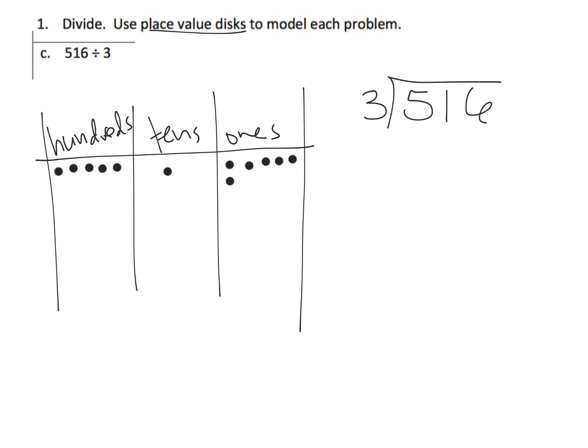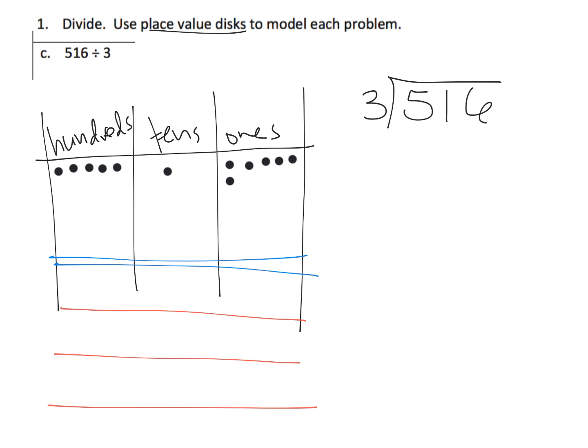We are going to divide by 3, so we need to put our dots into 3 groups. Eureka Math begins to do some shorthand where they're not actually drawing lines to show the 3 groups — they're just clumping them. You teachers know your students, so if you can do that without being explicit, go ahead. We have 5 dots that need to be sorted into 3 groups, so each group gets 1 dot. That means we've used 3 dots, and we have 2 remaining. Those 2 need to be cashed in for 10 tens.